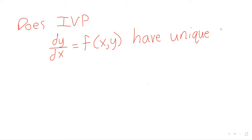But I would like to sort of float the question: does the initial value problem, IVP, dy/dx equals f(x,y), have a unique solution always? I've called this an initial value problem. It will become an initial value problem once I add the initial value.